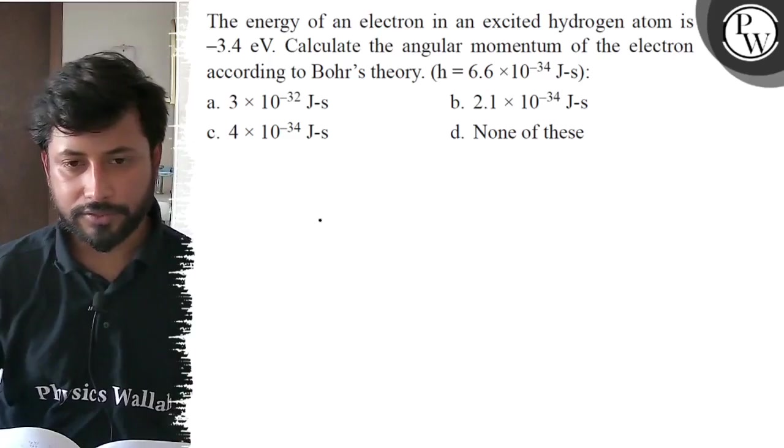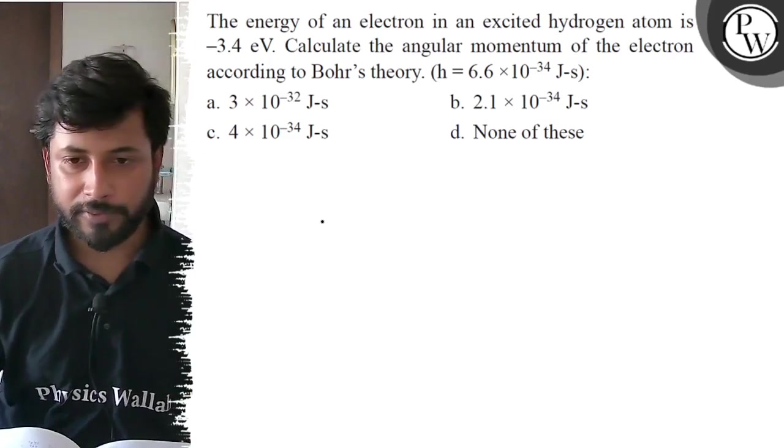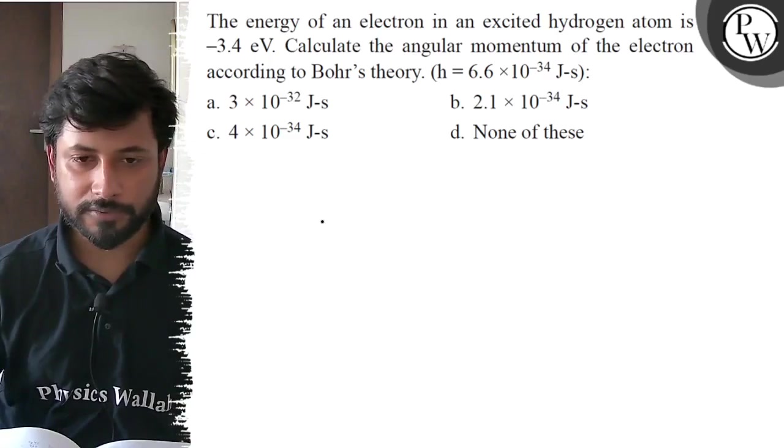Option A: 3 × 10⁻³² J·s. Option B: 2.1 × 10⁻³⁴ J·s. Option C: 4 × 10⁻³⁴ J·s. Option D: none of these.